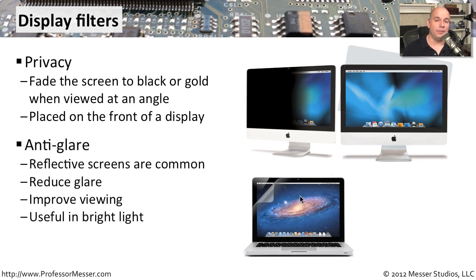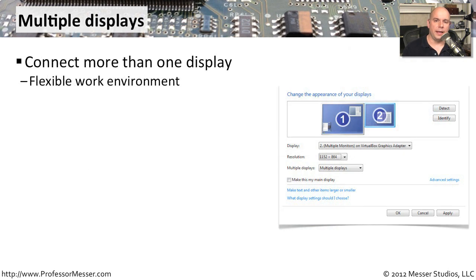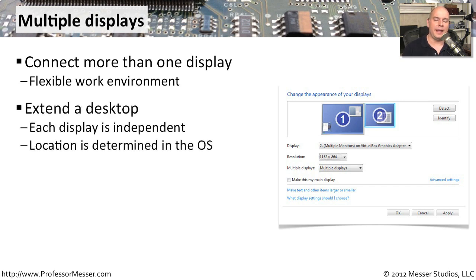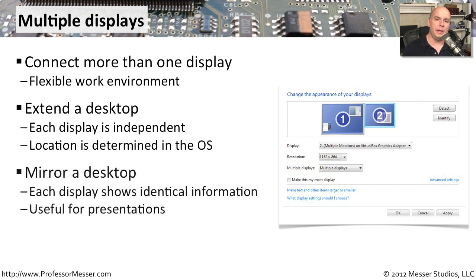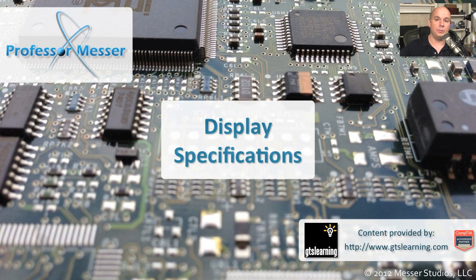Another common filter is an anti-glare filter. Today's monitors tend to be very glossy, so ambient light reflects off the screen and makes it difficult to see. By using anti-glare screens, you can reduce the glare and see the screen much more easily. Many people also use multiple displays on their workstation — you can have information on one screen and a completely different set of things on another, easily moving items between them. You can extend the desktop across multiple screens to place different applications in different places, or mirror the desktop, which is useful when presenting to a group so everyone sees exactly what's on your screen.